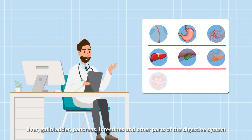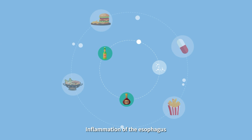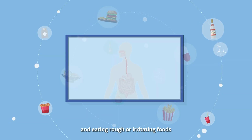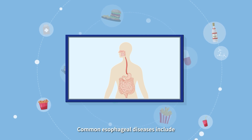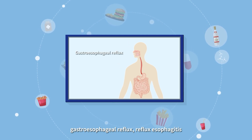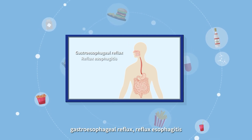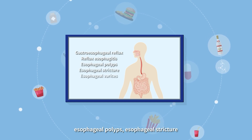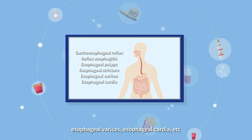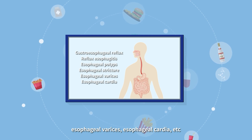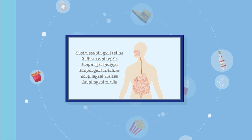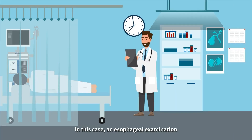Common diseases of the digestive system can occur in the esophagus, stomach, duodenum, liver, gallbladder, pancreas, intestines, and other parts. Inflammation of the esophagus can be caused by not paying attention to diet and eating rough or irritating foods. Common esophageal diseases include gastroesophageal reflux, reflux esophagitis, esophageal polyps, esophageal stricture, esophageal varices, and esophageal cardia issues.